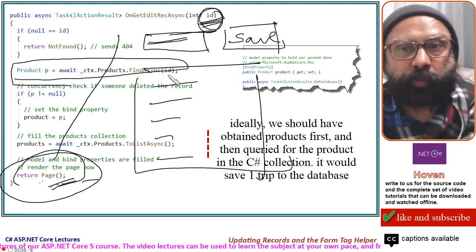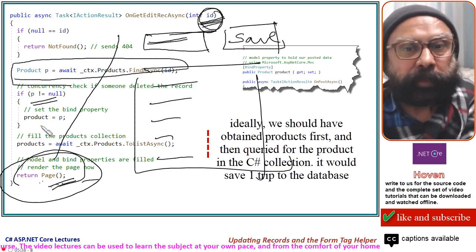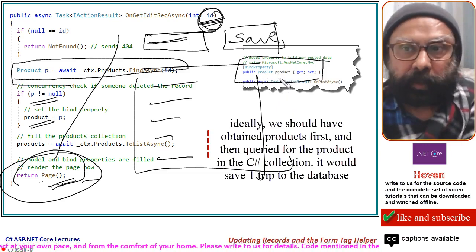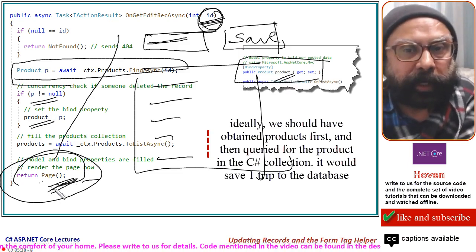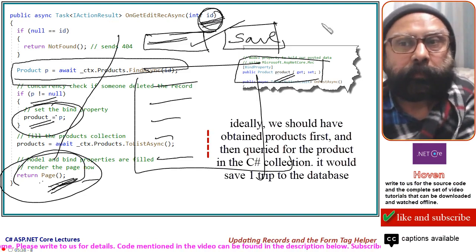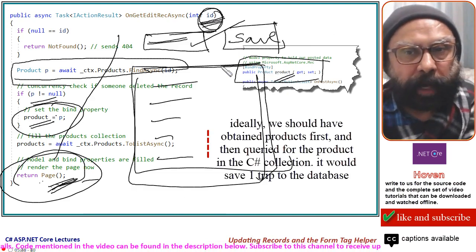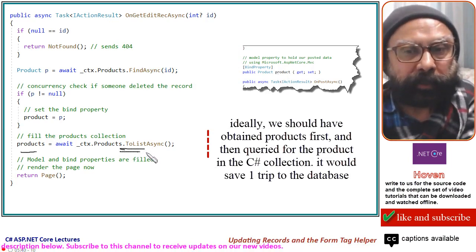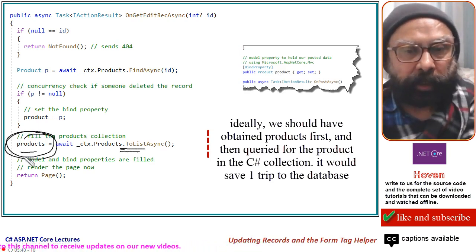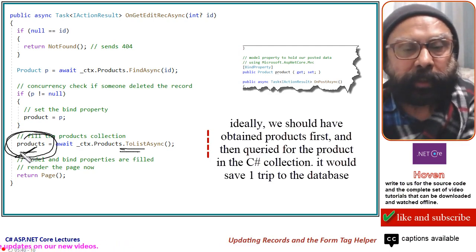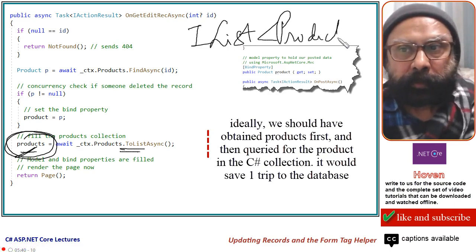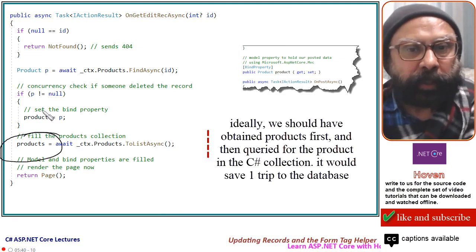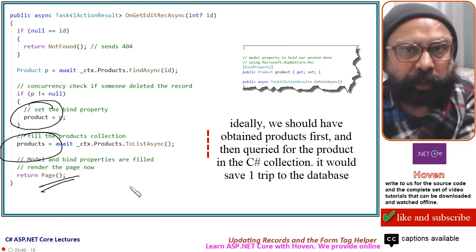We use Products.FindAsync to query that item from the database. If that item is there, we save it in the bind property. When you save it in this bind property and the page is displayed, the data for this product will appear inside the form. We also send the records for the display part using Products equals await context dot ToListAsync. This selects all the items from the database to fill the products collection, which is the IList of Product displayed on the page.